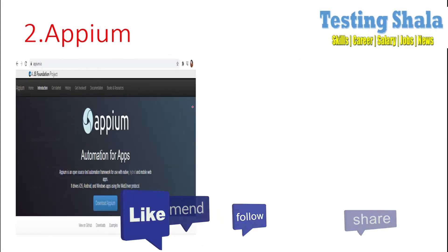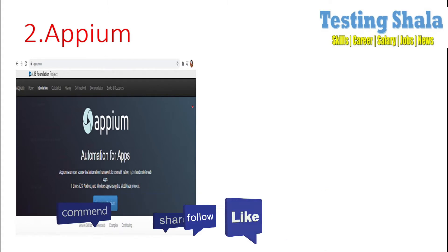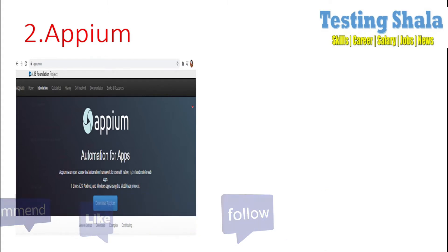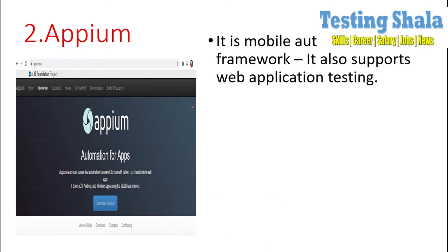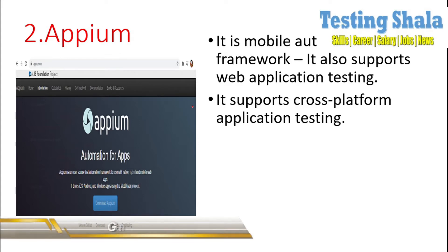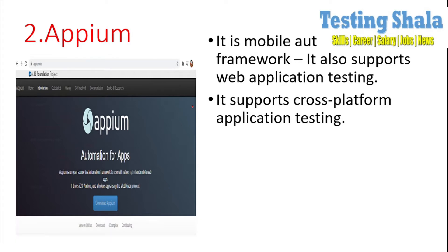The second tool which can be used to automate web applications is Appium. This is also an open source tool which is an extension of Selenium. Normally Appium is developed for mobile applications, but it can also be used for automating web applications. Because it is an extension of the Selenium framework, it supports all the cross-platform browsers and operating systems.